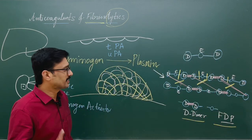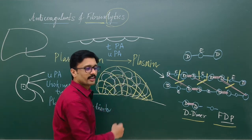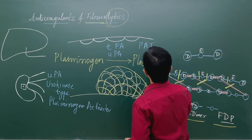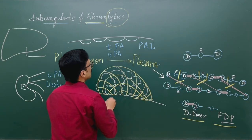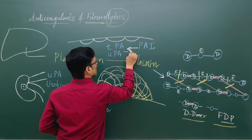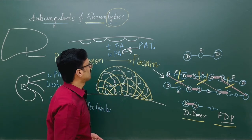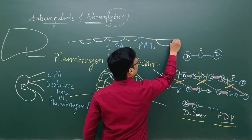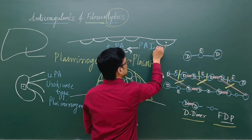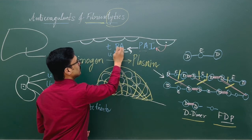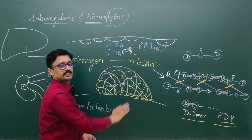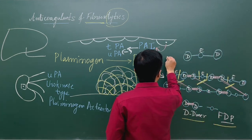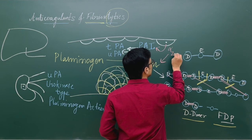There is also regulation for this fibrinolytic system. If unchecked, it continues to break down fibrin threads. This is under regulation by a plasminogen activator inhibitor. This plasminogen activator inhibitor will inhibit tPA and uPA, and it is also secreted from endothelial cells. So endothelial cells secrete both the activators and the inhibitor, regulating their activity.